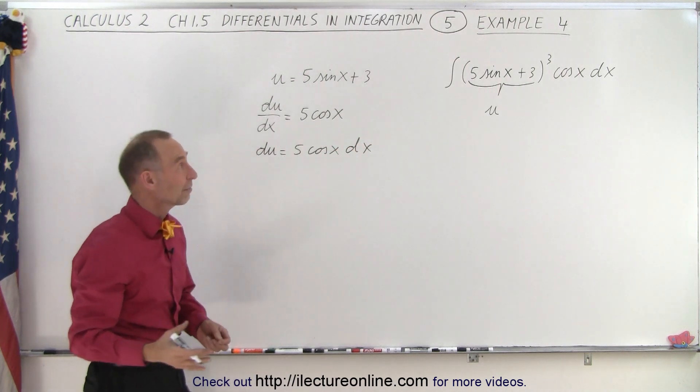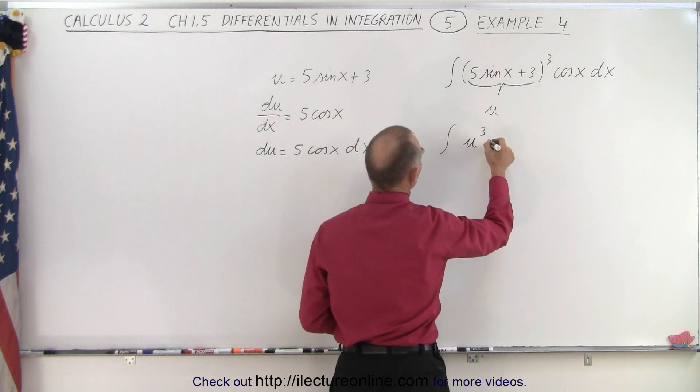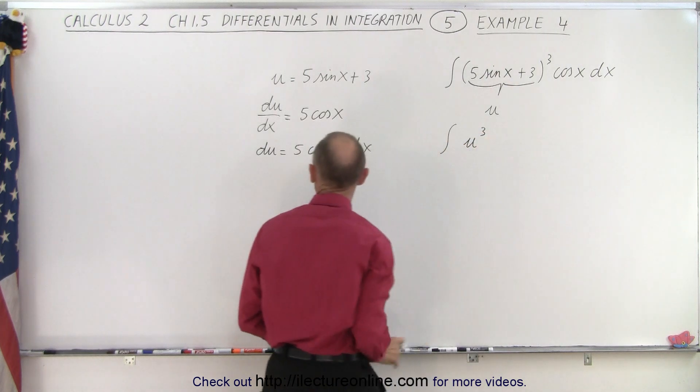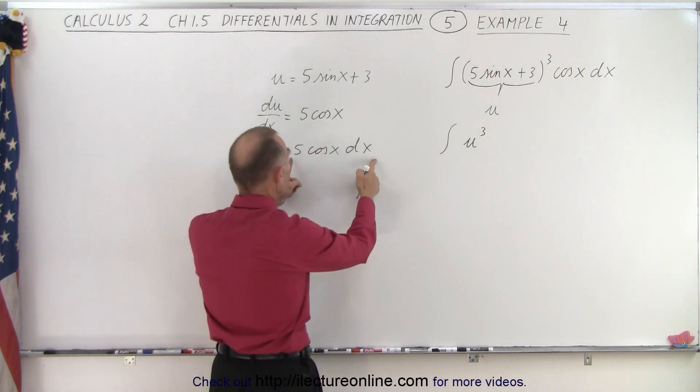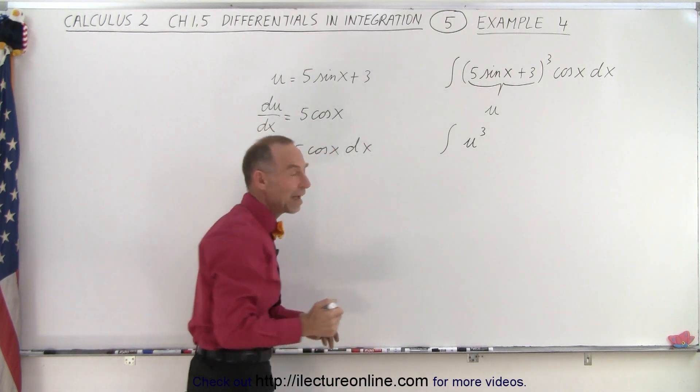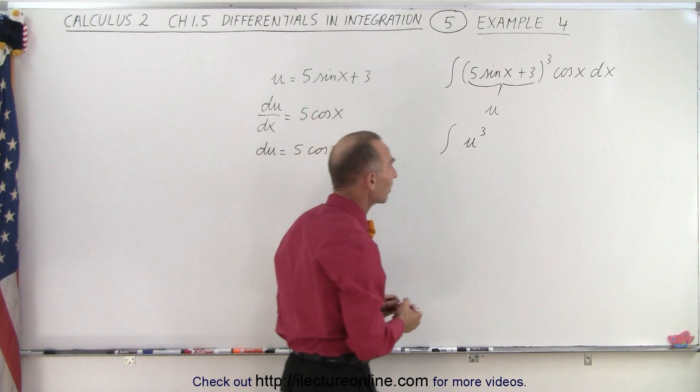So essentially what we have here is we have the integral of u cubed times, well, not quite. I don't have my du, because notice my du would be 5 times the cosine of x dx, and I don't have that. I have a cosine of x dx, which means I need to multiply this times 5.